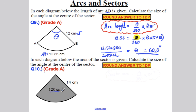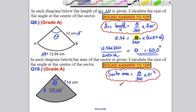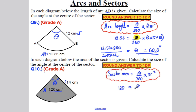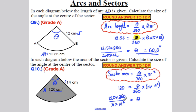Next, we're given the area as 120 and the radius is 14, and again we need the angle. Substituting into area = (θ/360) × πr²: 120 = (θ/360) × π × 14². Making θ the subject by multiplying both sides by 360 then dividing by π × 14² gives 70.2 degrees to one decimal place.